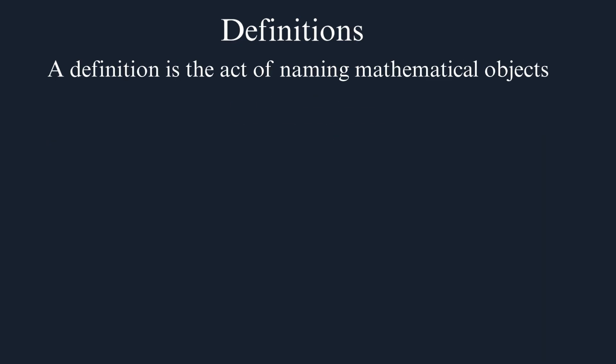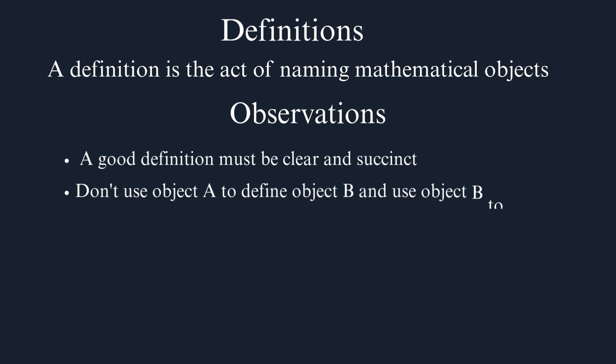Observations about good definitions. A good definition must be clear and succinct. It's not good for a definition to be very long and full of roundabout ideas. It should be clear and direct to the point. Don't use object A to define object B and use object B to define object A, thus creating a vicious circle. When you use object A to define B and use B to define A, that's not valid. It's not a good definition. You don't prove definitions. Definitions are simply defined, and we accept them.